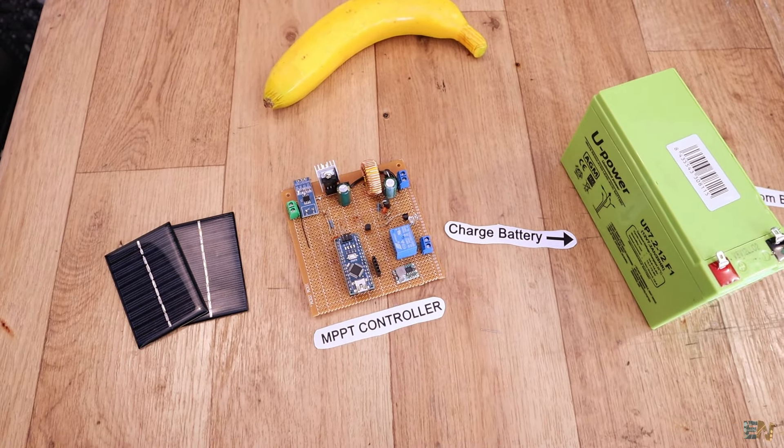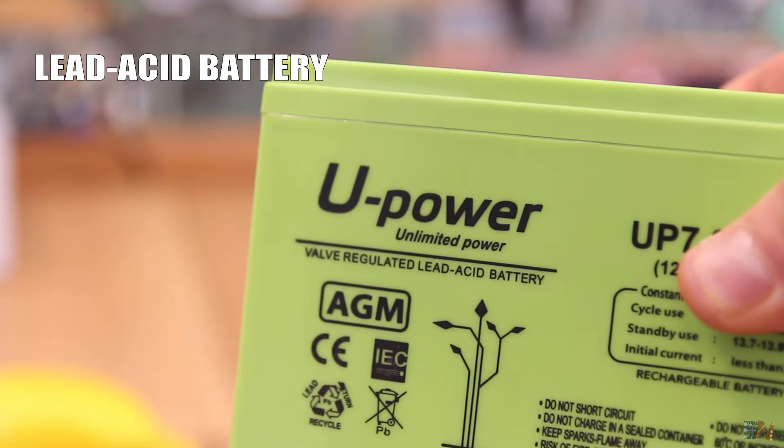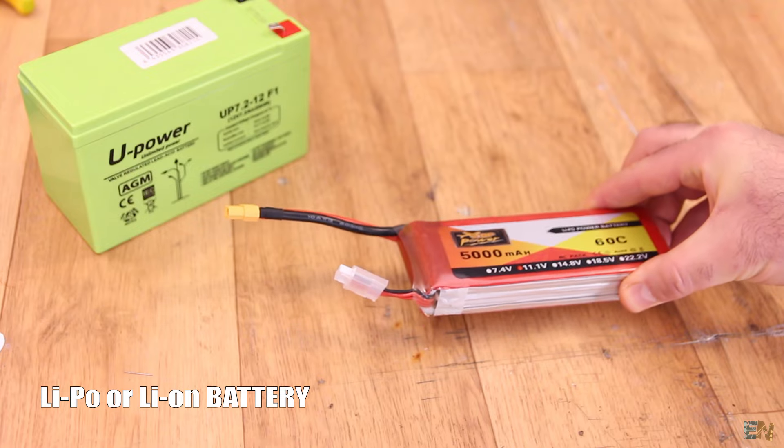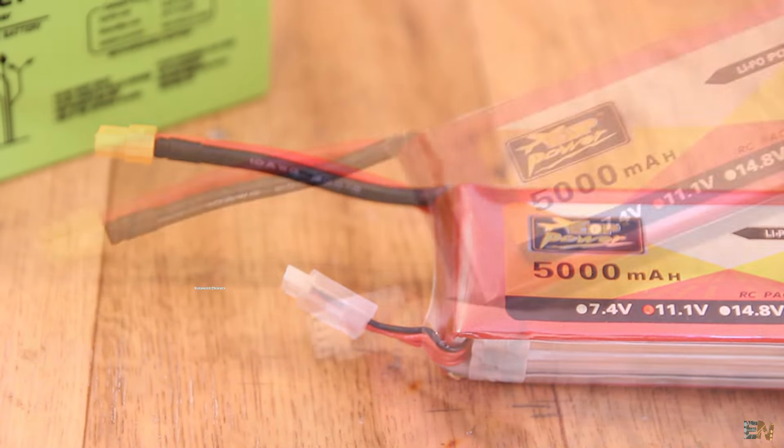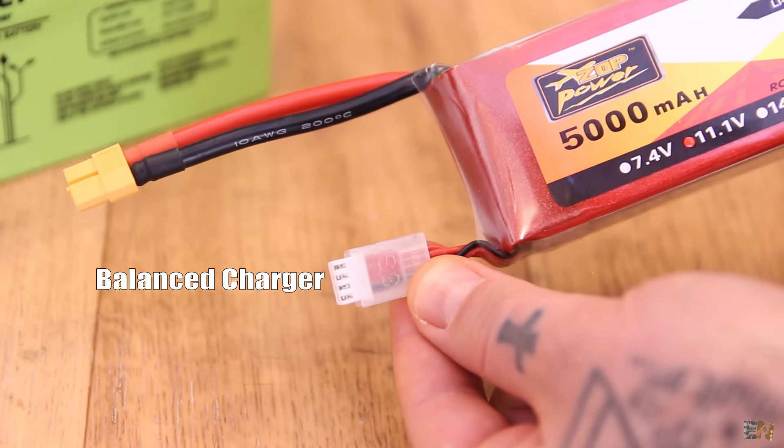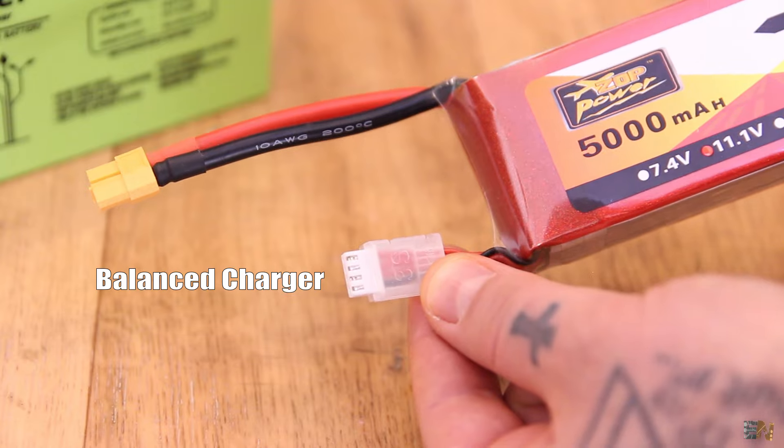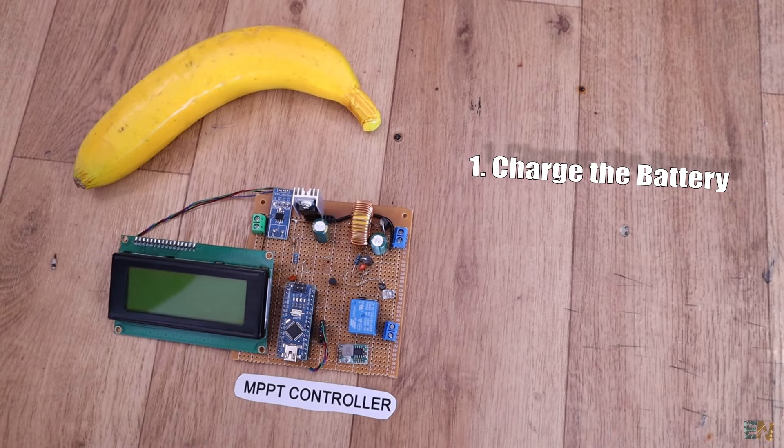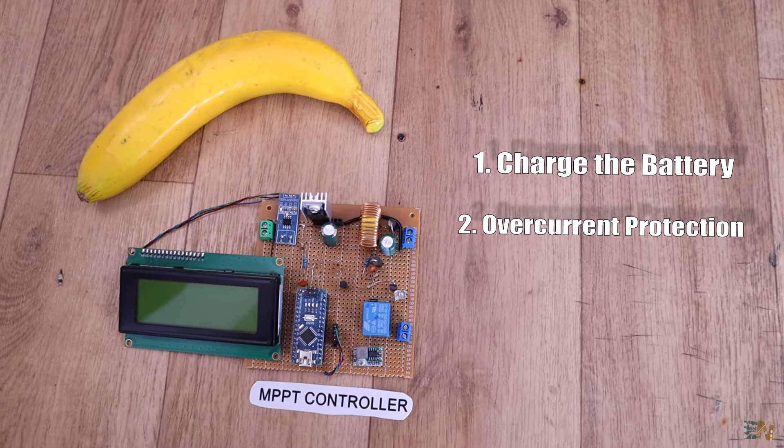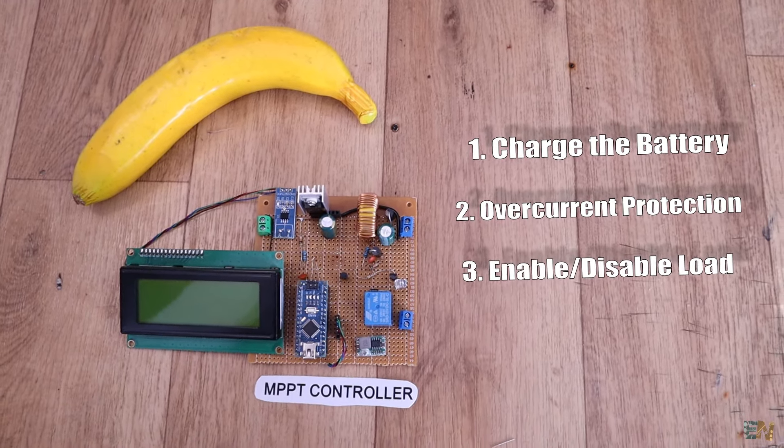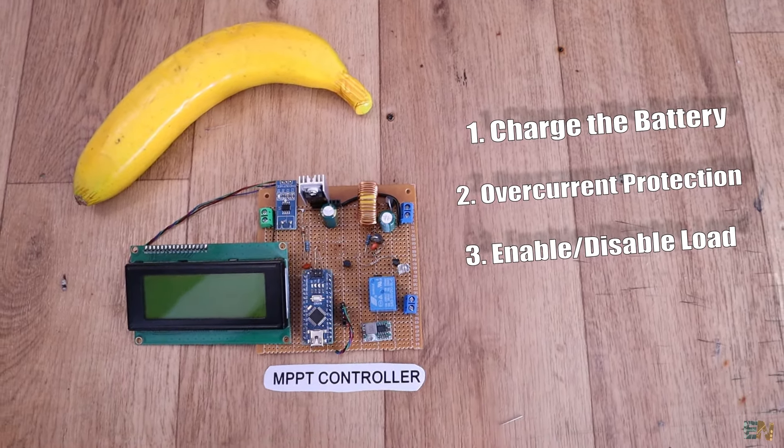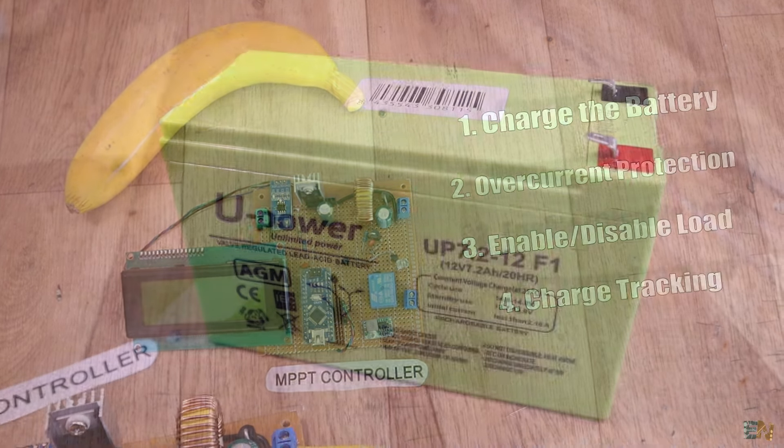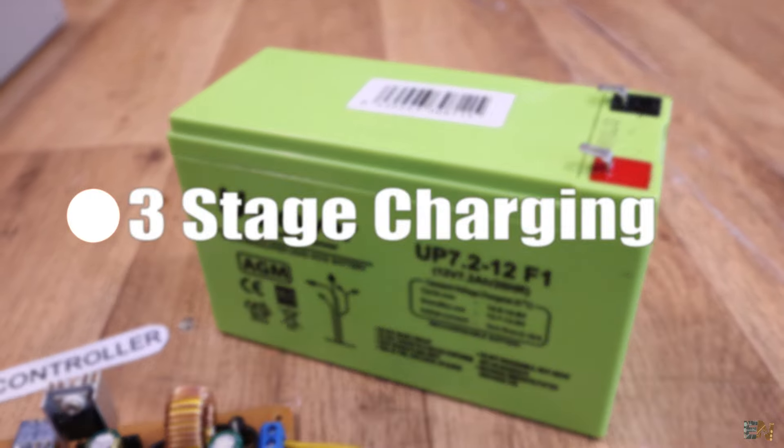Please have in mind the charger that we will make today is for lead acid batteries. If you have a solar panel system with LiPo or Li-ion batteries, you will need a balanced charger and connections to each cell. The MPPT controller is in charge of charging the battery in different modes, protect both the battery and the solar panel of overcurrent, enable or disable the load when the battery is undervoltage and also keep track of the charge capacity.